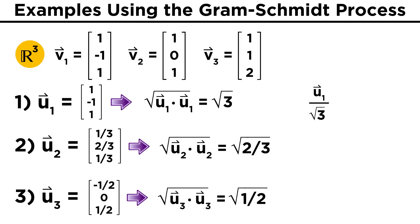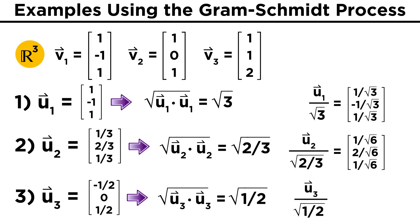Now taking u1 and dividing by its length, we get one over root three, negative one over root three, one over root three. Taking u2 and dividing by its length, we get one over root six, two over root six, one over root six. Finally, dividing u3 by its length, we get negative root two over two, zero, root two over two.